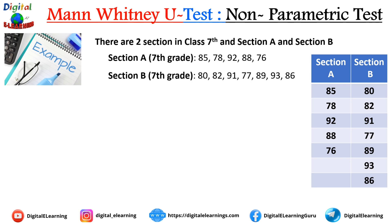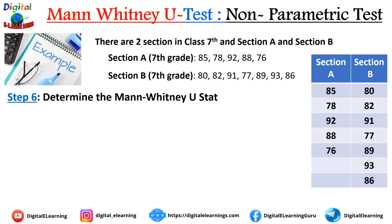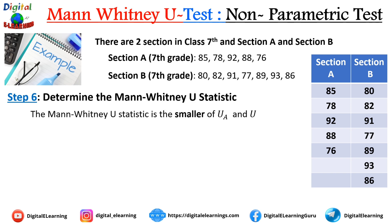Step 6: determine the Mann-Whitney U statistic. The Mann-Whitney U statistic is the smaller of U_A and U_B. Since U_A = 21 and U_B = 14, the minimum is 14, so the Mann-Whitney U statistic is 14.